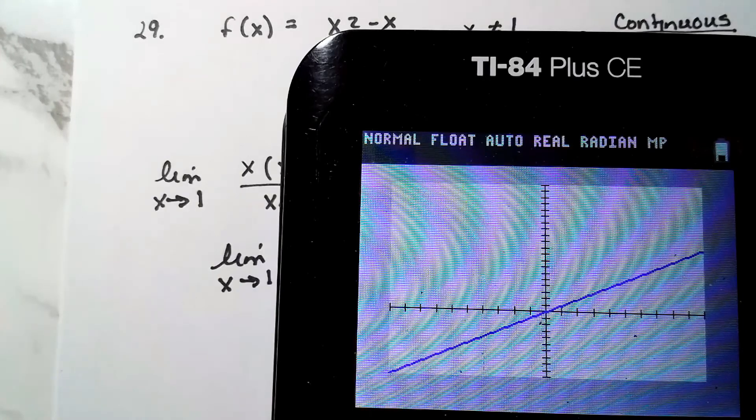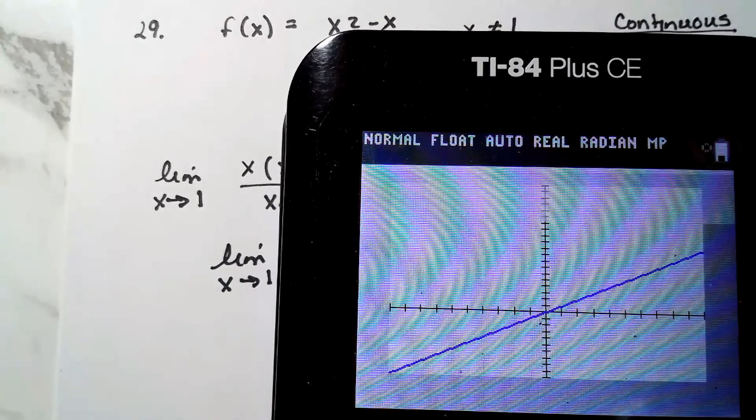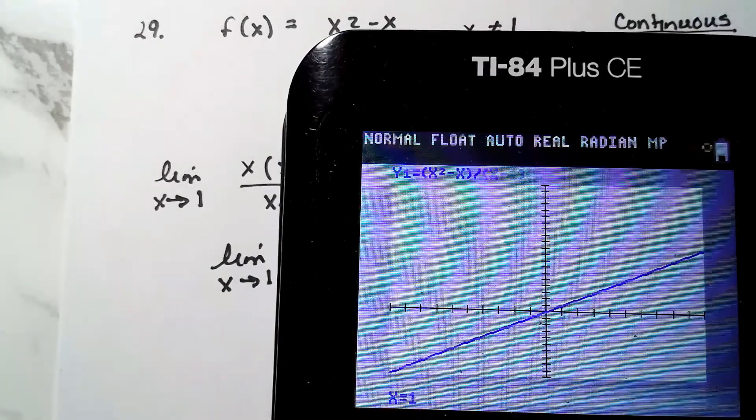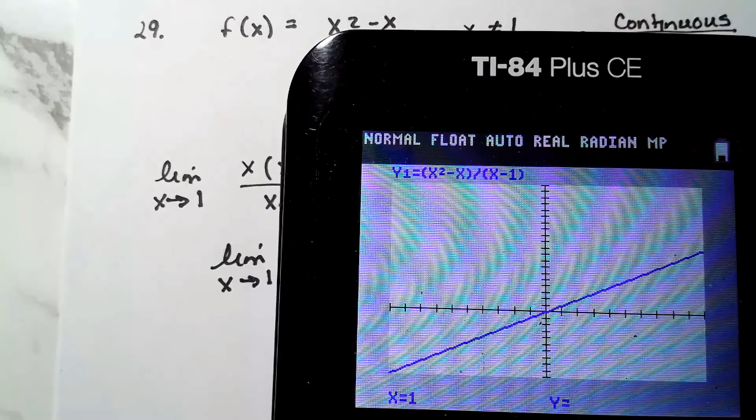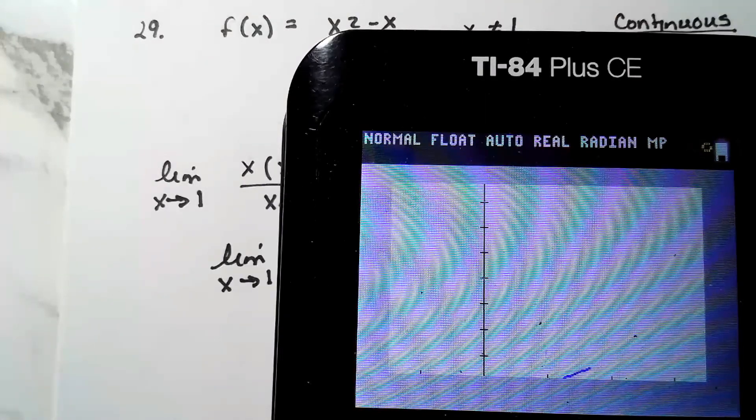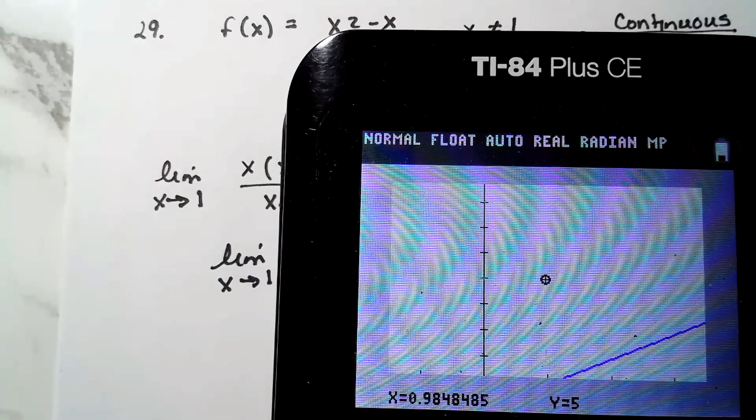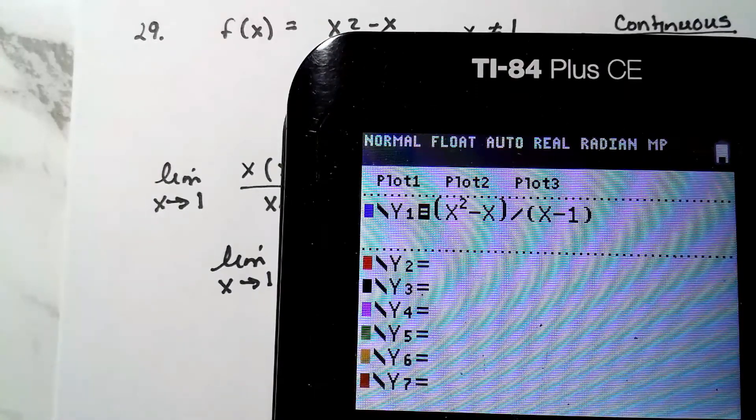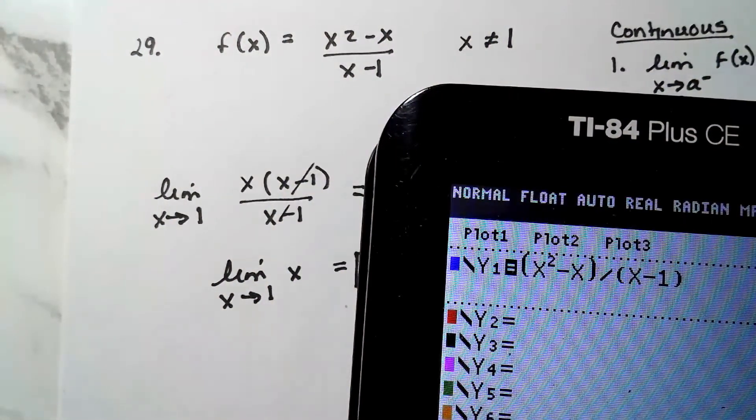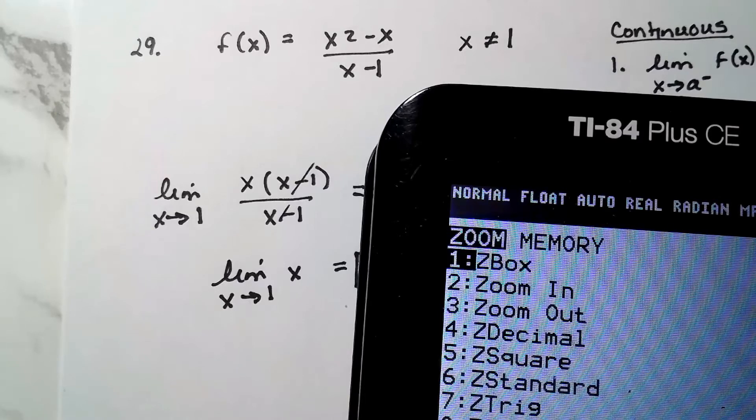And if I graph this function, well, you can't really see at one, but if I zoom into x is equal to one. Trace one, zoom in. x squared minus x over x minus one. Why isn't it graphing for me? Zoom six.